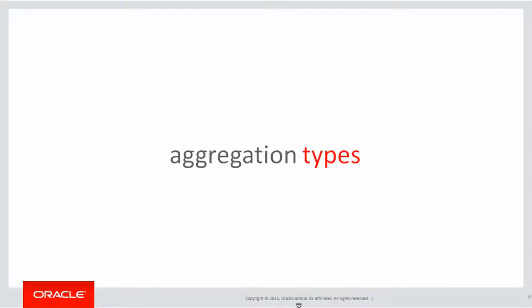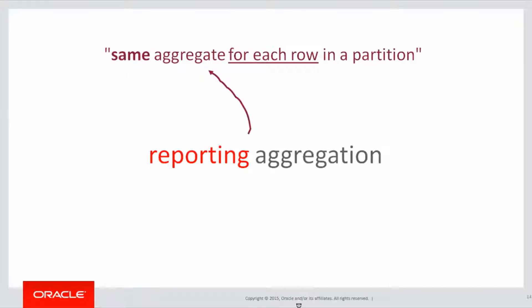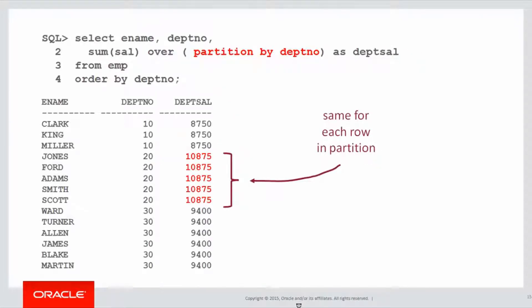Key point number two was that there were two types of aggregation. There was reporting aggregation, which gave us the same aggregate for each row in a partition. For example, we look here, when we do sum salary partition by department number, we get the same row for each department, department 20 in the case that's highlighted.